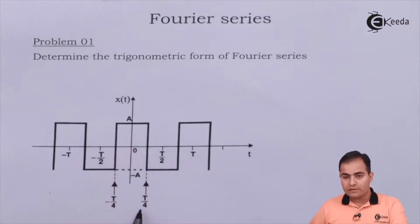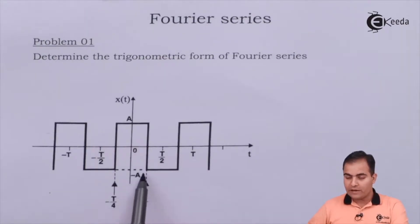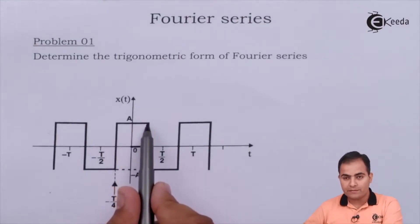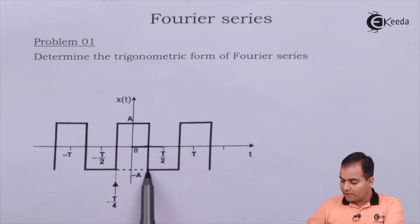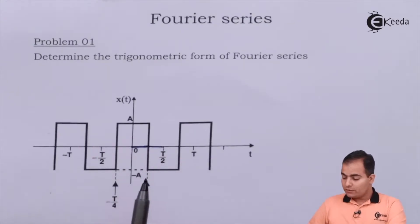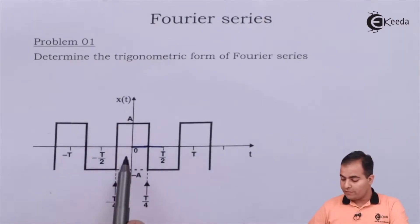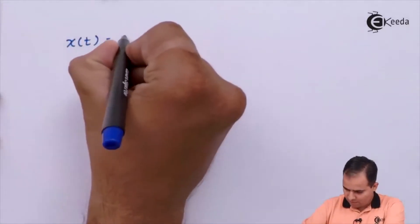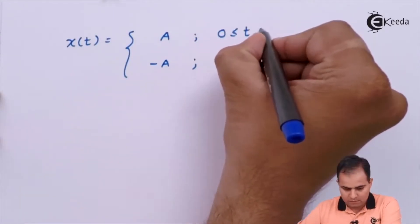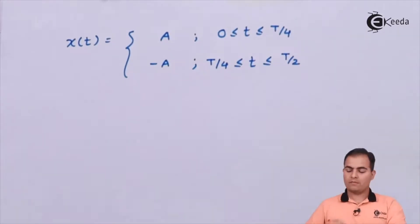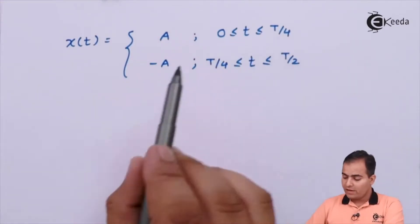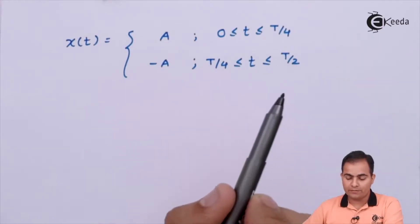We can write x(t) piecewise: between 0 to T/4, x(t) has amplitude A, whereas from T/4 to T/2 it has amplitude minus A. In between 0 to T/4 we have positive amplitude, and from T/4 to T/2 we have negative amplitude minus A. So we write the equation for x(t) in both intervals with amplitude A and minus A respectively.